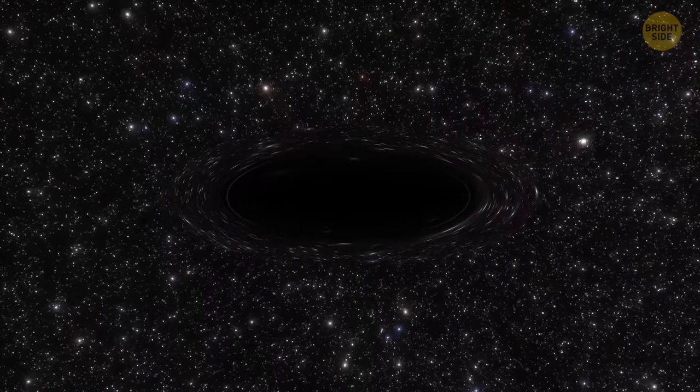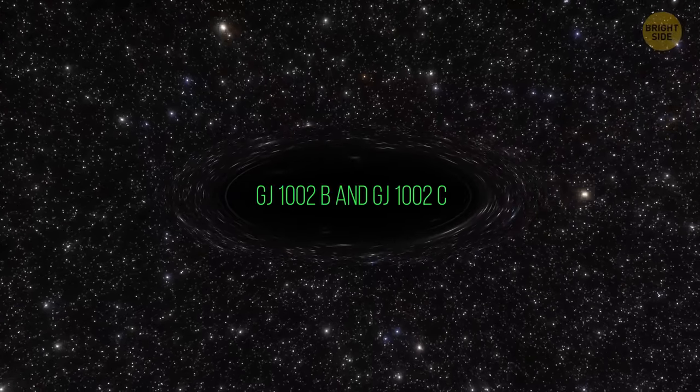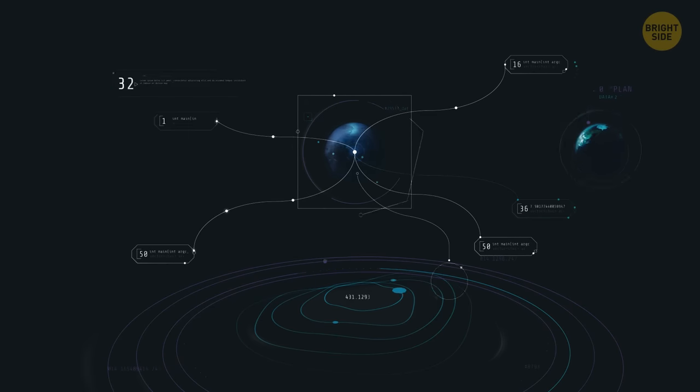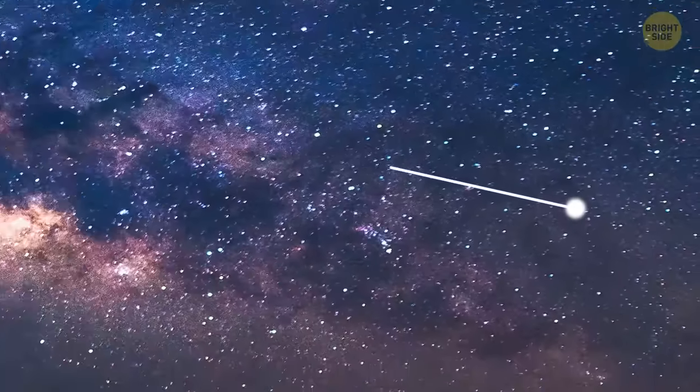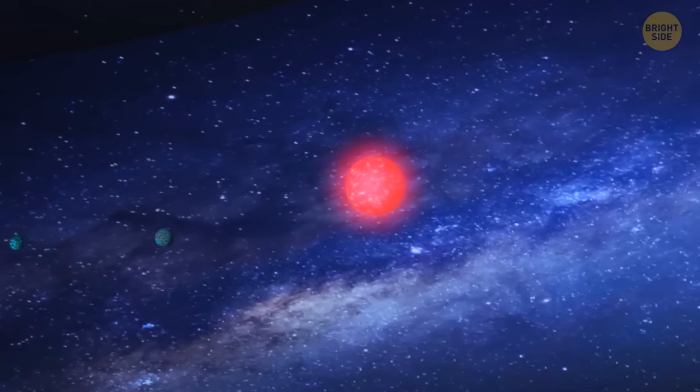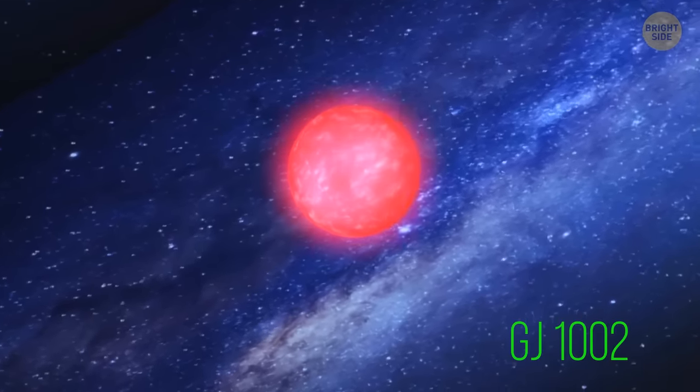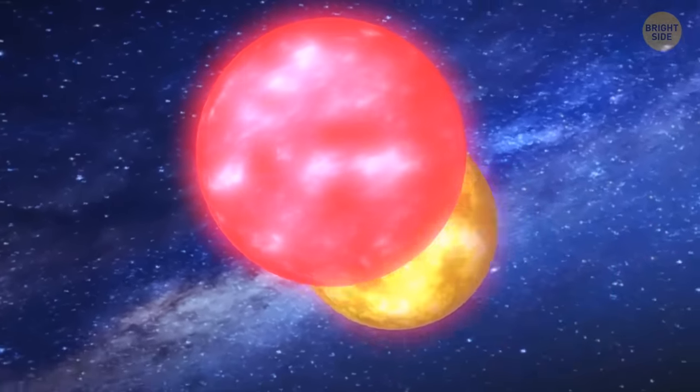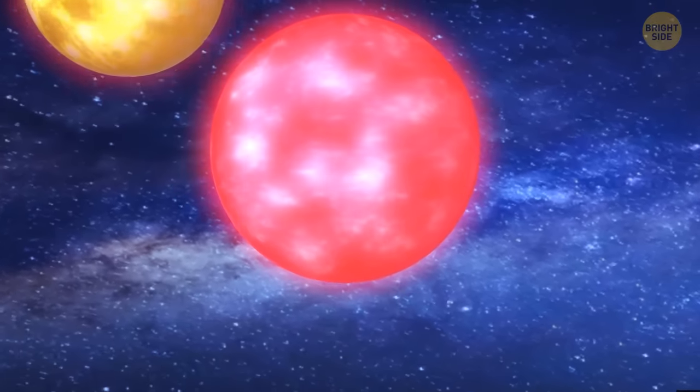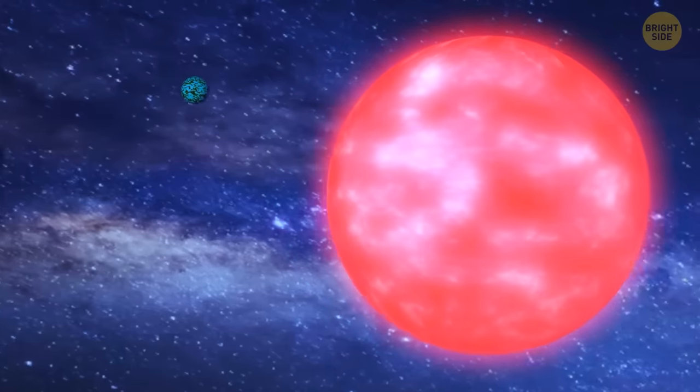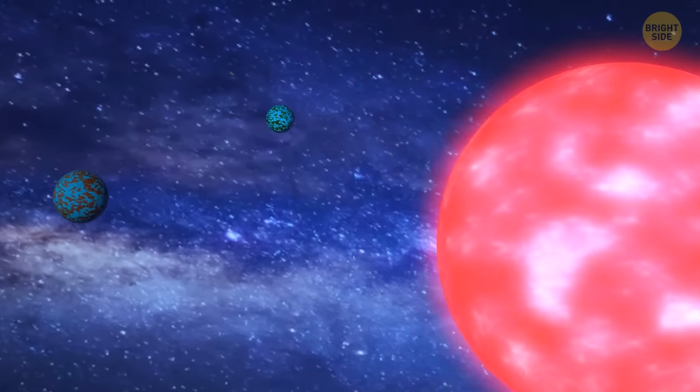G.J. 1002b and G.J. 1002c. An international team of scientists, led by researchers at the Instituto de Astrofisica de Canarias, has found two Earth-like planets just 16 light-years away from our solar system. They both orbit a red dwarf star called G.J. 1002. Our Sun is a yellow dwarf, which means that G.J. 1002 is much cooler and fainter than our own Sun. But that's okay. Both planets are very close to its star, so it shouldn't be too cold or dark on them.